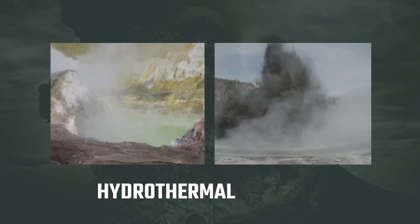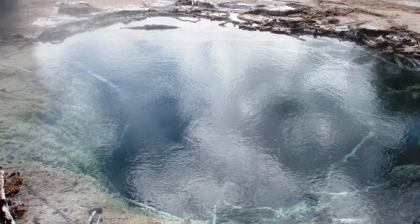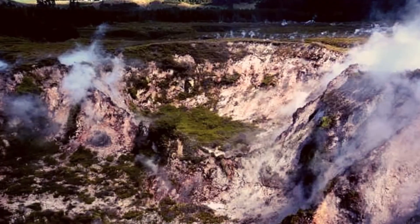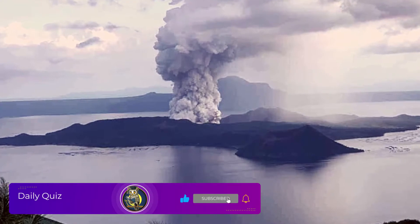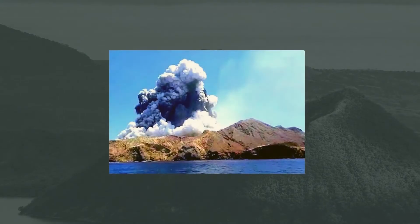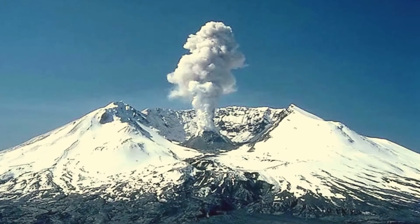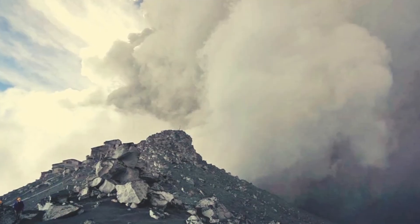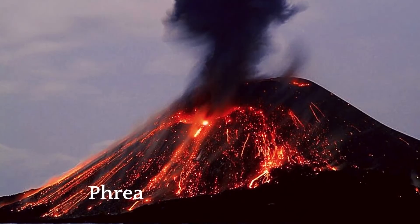Hydrothermal eruption: an eruption driven by the heat in a hydrothermal system. Hydrothermal eruptions pulverize surrounding rocks and can produce ash but do not include magma. These are typically very small eruptions. Phreatic eruption: an eruption driven by the heat from magma interacting with water. The water can be from groundwater, hydrothermal systems, surface runoff, a lake, or the sea. Phreatic eruptions pulverize surrounding rocks and can produce ash but do not include new magma.